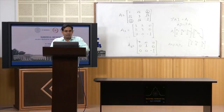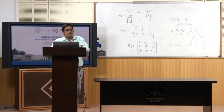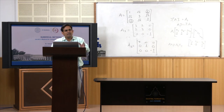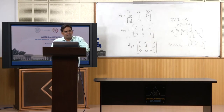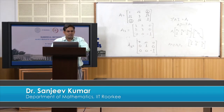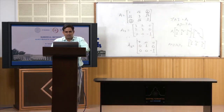In this lecture we have learned a method for calculating eigenvalues and eigenvectors using a series of similarity transformations formed using rotation matrices, such that the off-diagonal elements become 0. In the next lecture we will learn another method for finding the largest eigenvalue and its corresponding eigenvector, called the power method. Thank you very much for this lecture.